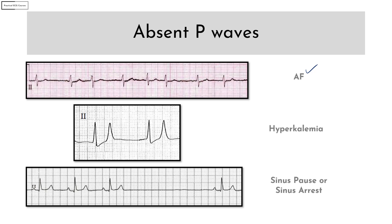If there are tall peaked T waves, consider hyperkalemia. In hyperkalemia, there is electrical atrial paralysis which results in absent P waves. If there is a sinus rhythm with a sudden pause which has no arithmetical relationship to the basic sinus rate, then consider a sinus pause or sinus arrest.